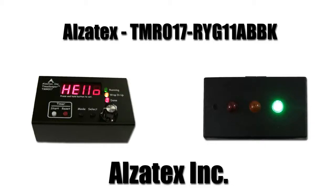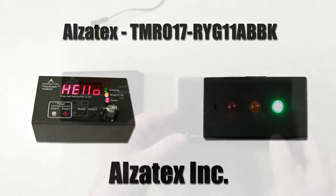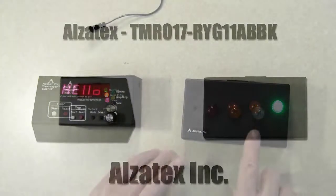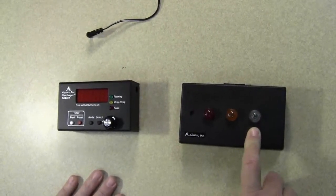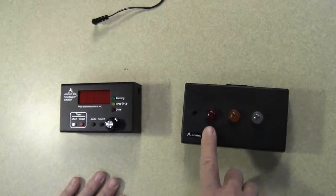Today I'm going to demonstrate how to use the TMR017 with an RYG11 red, yellow, green indicator. This red, yellow, green indicator is used for timing events. So green means run, yellow means wrap it up, red means you're done.